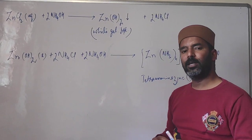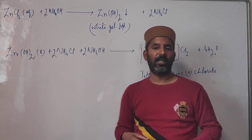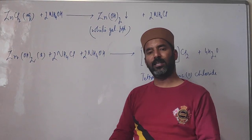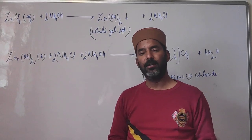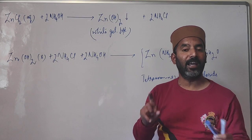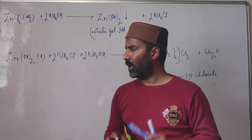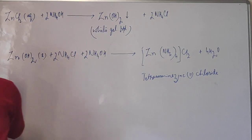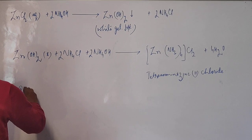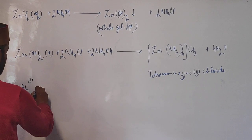So if on adding ammonium hydroxide to a salt solution we get a white gelatinous precipitate that dissolves in excess alkali, the salt contains zinc ions Zn²⁺. Next, we discuss the action of ammonium hydroxide on lead salts.